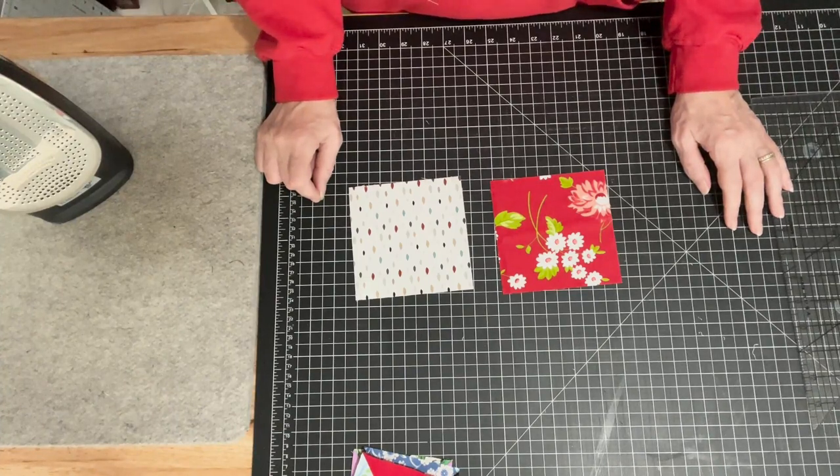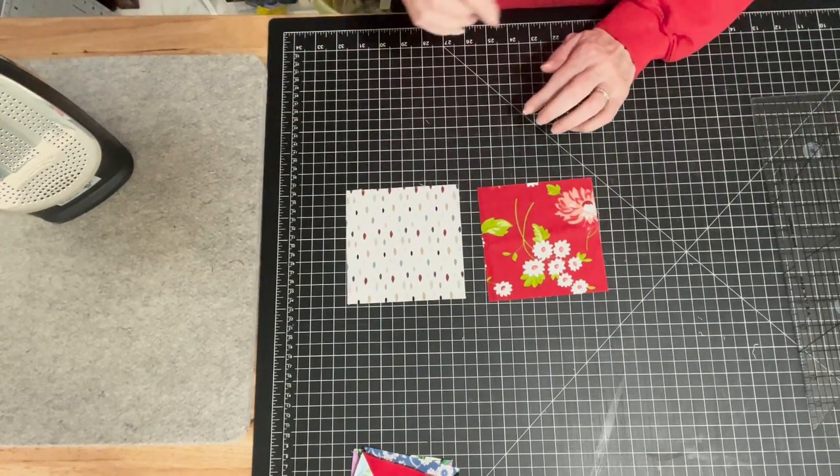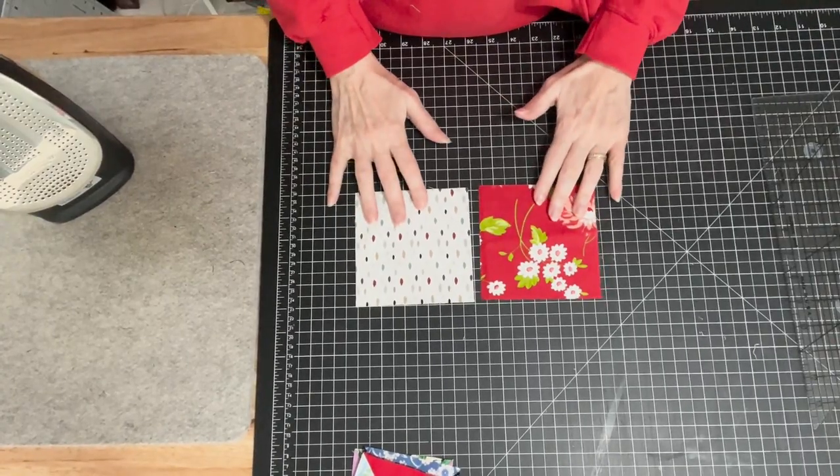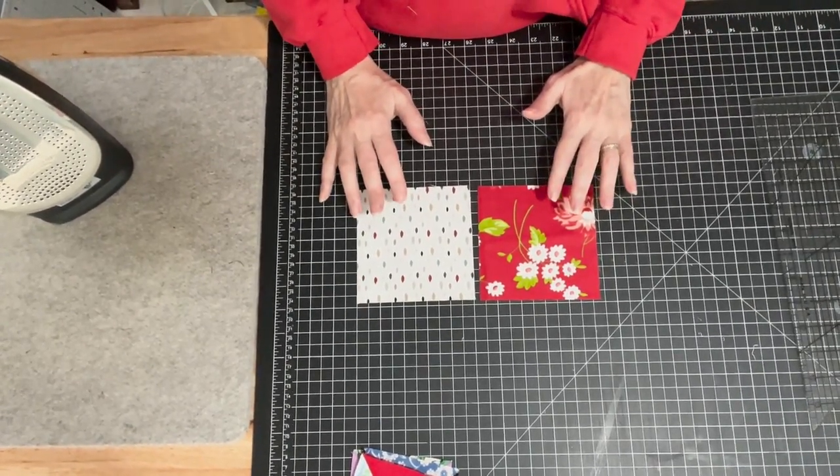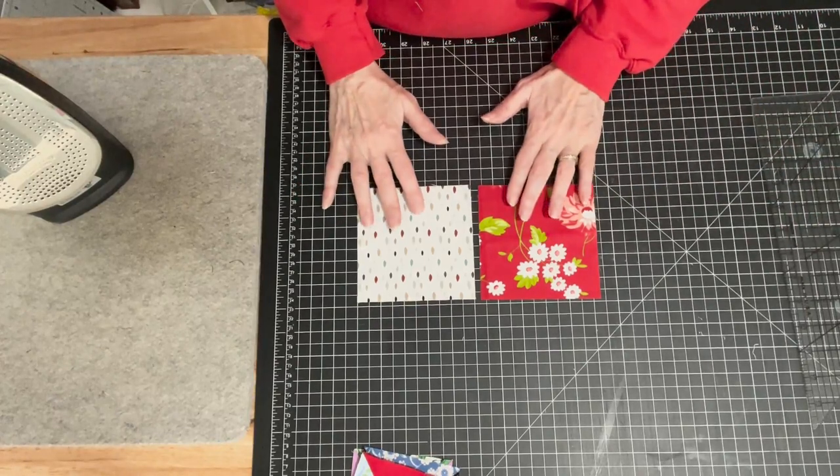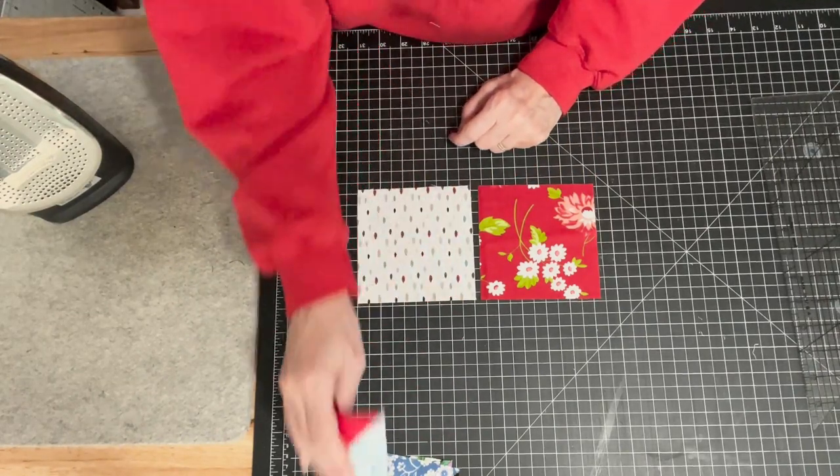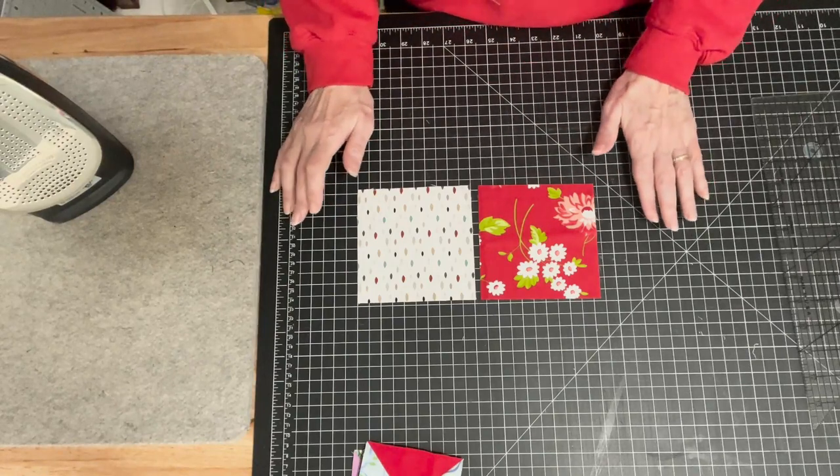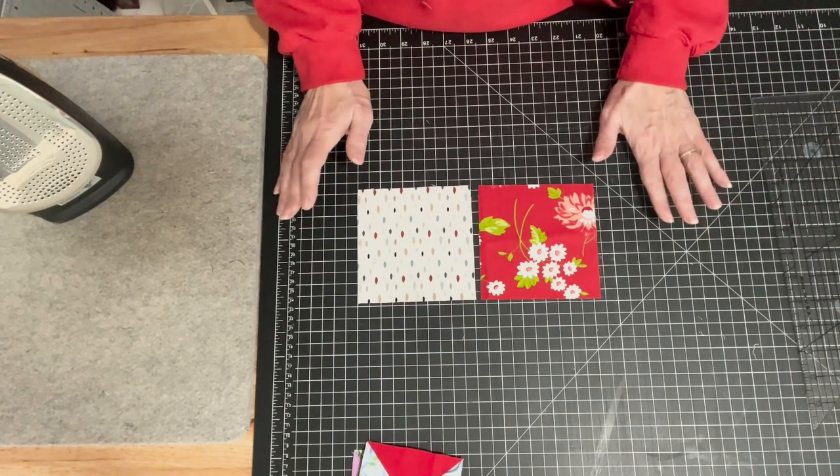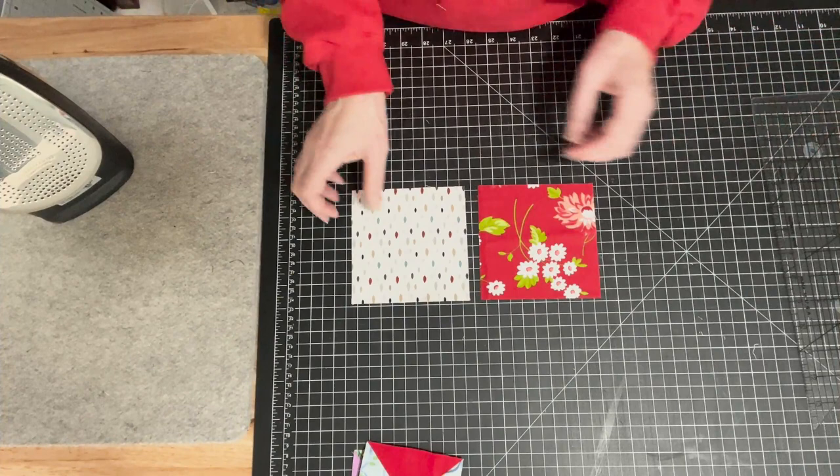I'm going to use five-inch squares, but you can use ten-inch squares or any size squares. A simple rule of thumb is that whatever size squares you decide to use, the final project is going to go down by an inch. So if I'm using five-inch squares, my final hourglass block will be four inches after I trim it up. If you start with a ten-inch square, your finished square will be nine inches, and then once you sew it into the actual quilt, that's going to bring it down a little more.